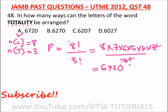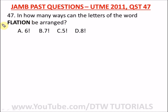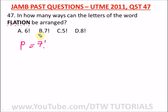Our next question is from JAM 2011 question 47: in how many ways can the letters of the word 'flirtation' be arranged? There is no repetition in this word, so we count the letters — there are seven. The letters can be arranged in seven factorial ways. The correct option is option B.